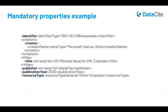This example shows just the six mandatory properties, which is the minimal metadata that has to be included to register a findable DOI. You can see here the identifier, creator, title, publisher, publication year, and resource type, which has a resource type general attribute — a mandatory attribute.